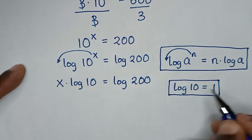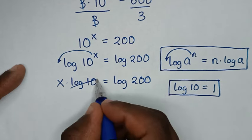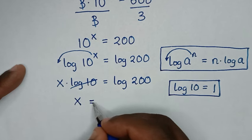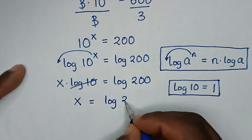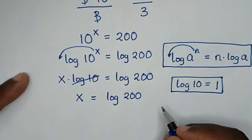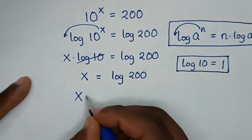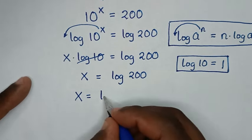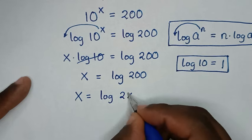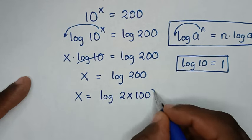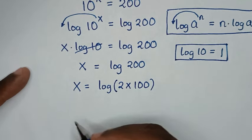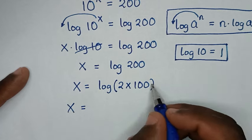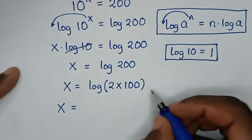Since log of 10 is 1, we have 1 times x, which is x, is equal to log of 200. Then x is equal to log of 200, which is the same as log of 2 times 100.